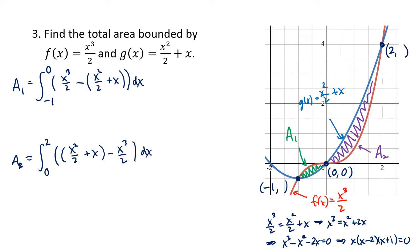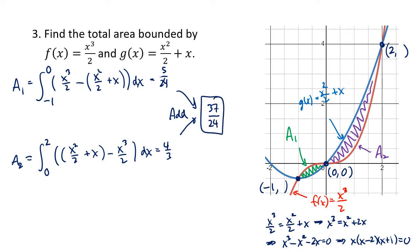We integrate the two integrals separately and add them together. The first integral works out to be 5 over 24, and the second integral works out to be 4 thirds. Adding those together gives 37 over 24, which is the total area of this region.